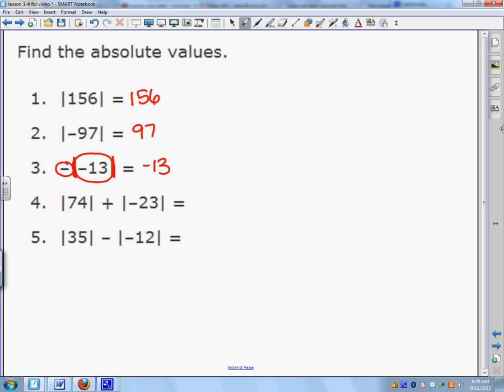So this one's 74, the absolute value of 74, plus the absolute value of negative 23. So the absolute value of 74 is 74, and the absolute value of negative 23 is positive 23, because it's 23 steps from 0. So I add them together, so I add them together, and I get 97.